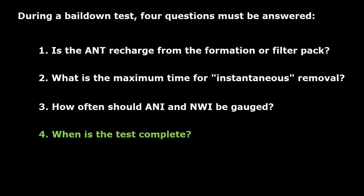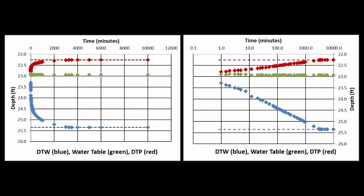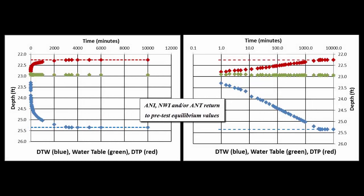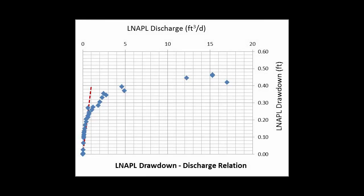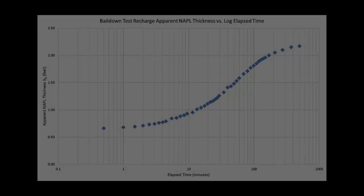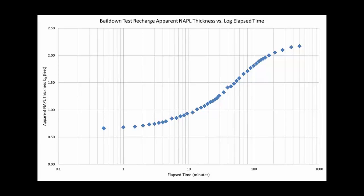When is the test complete? If the air-NAPL and NAPL-water interfaces and/or the apparent NAPL thickness return to and stabilize at pre-test equilibrium values on a hydrograph, then the test is complete. If the well recharges past the pre-test equilibrium values, then equilibrium is different from the pre-test conditions. If a plot of discharge versus corresponding drawdown values shows both reaching zero simultaneously, the test is complete. Additionally, if a plot of apparent NAPL thickness versus log time exhibits an S-shaped trend, signifying that the apparent NAPL thickness is no longer increasing, the test is complete.